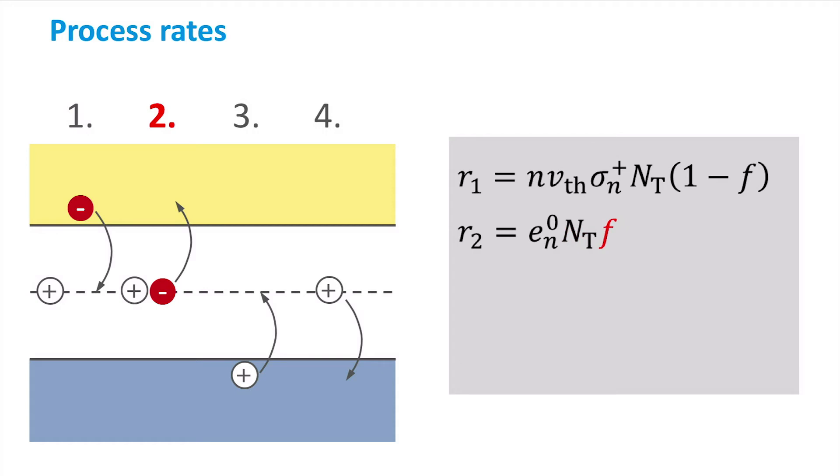since this process involves trapped electrons. En is the emission coefficient of electrons, which is a measure of the emission probability. It also contains the charge state, which is neutral since this donor-like trap is occupied.